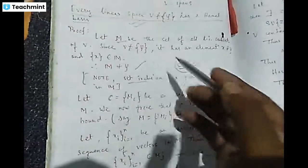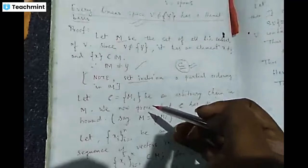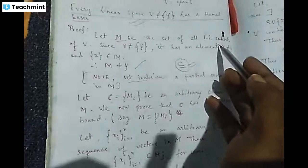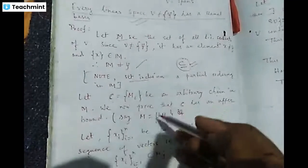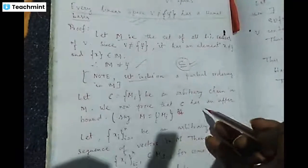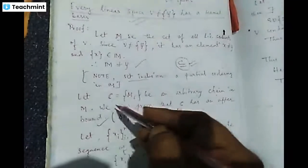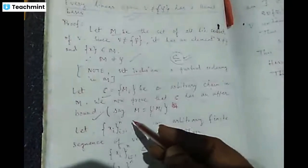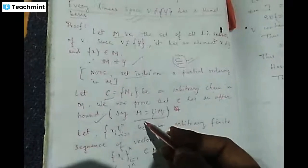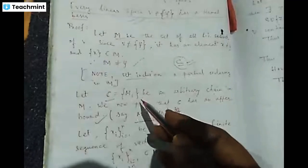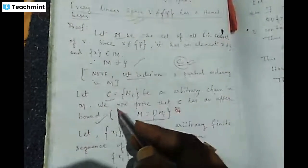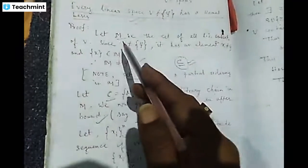So M can be the collection of all linearly independent subsets as an arbitrary chain belonging to C. We now prove that C has an upper bound. We take M* equal to the union of M_i as the upper bound, where M* is taken from M, the set of all linearly independent subsets of V.